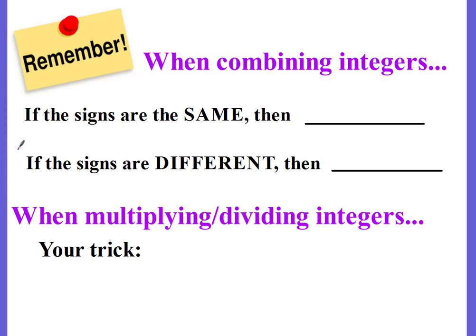First, remember: when combining integers, if the signs are the same, then you add them up. If the signs are different, then you need to subtract, and then use the sign of whoever has more. If there are more negatives, then your answer would be negative. If there are more positives, then your answer would be positive. When multiplying and dividing integers, if they have the same signs, your answer is positive. If the signs are different, then your answer is negative.